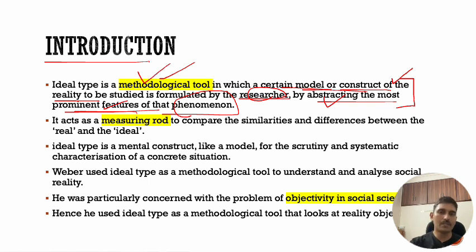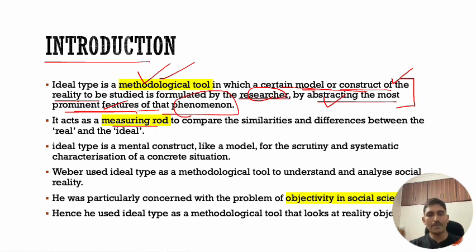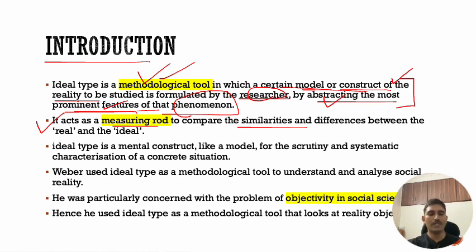So an ideal type is a methodological tool in which a certain model or construct of the reality to be studied is formulated by the researcher by abstracting the most prominent features of that phenomenon. It basically helps in comparison of different things — for example, when you want to compare religion in Asian society and religion in American society.